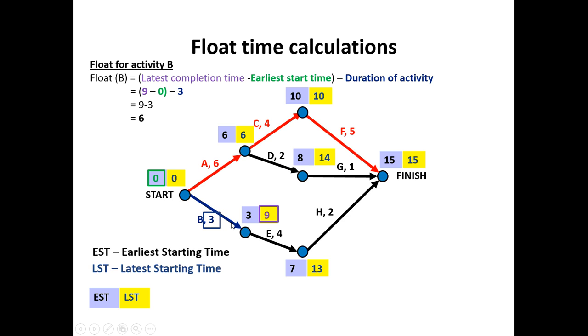The float activity for B, which is not on the critical path, we take the latest completion time, which is a nine. And from that we take the earlier starting time, which is a zero. So a nine take zero gives me nine. And then from that value, we subtract the duration of the activity. So it's nine. Take zero is nine. Take three gives me a float time of six. That means we can complete this task in the first three minutes and then sit and have a break, a coffee, relax for the next six minutes. Because the latest completion time or the latest starting time for the next activity is nine minutes. We only need three to get the job done.